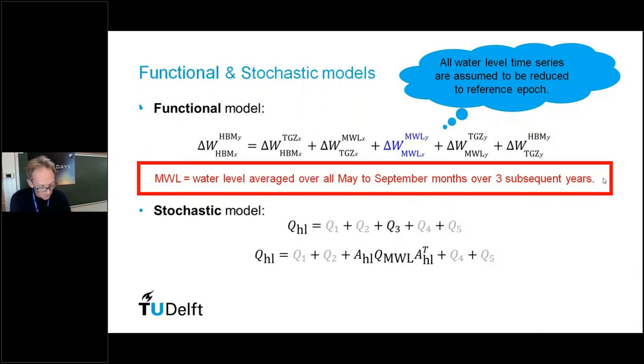Let me go to the functional and stochastic model. Basically, what we add is the potential difference between height benchmarks that are in the vicinity of tide gauges and that are part of the UELN network. These potential differences can be computed as a sum of five terms. We have the contribution from the potential difference from the height benchmark to the tide gauge zero, from the tide gauge zero to the mean water level, which is coming from observations. Then we have the potential difference in the mean water level at the two tide gauges, and this term is colored in blue because this is the only term that comes from the dynamic model.